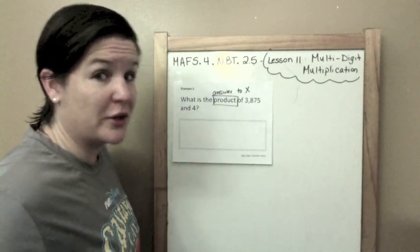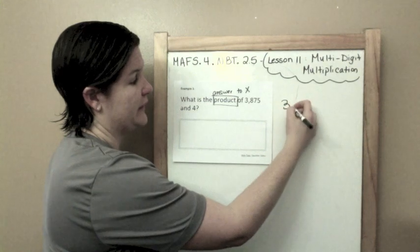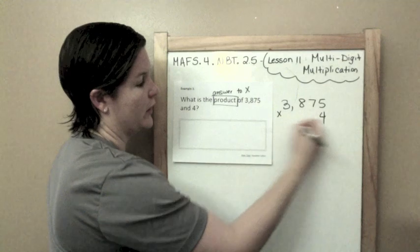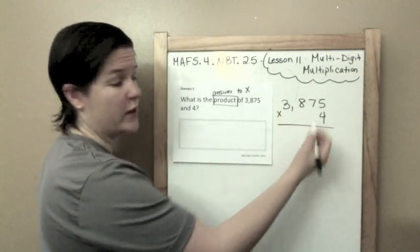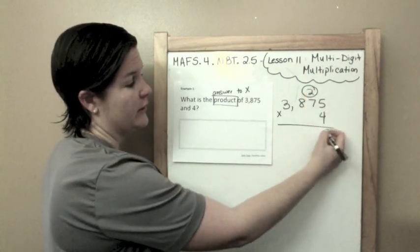So, parents, I'm going to do this the regular old-fashioned way. This is for you. So, 3,875 times 4. 5 times 4 is 20. Woo, it's high up here in the clouds. Nice landing, dude.